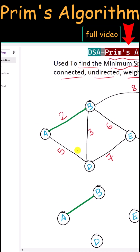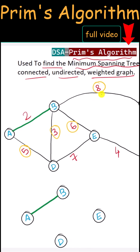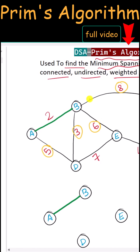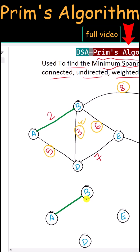We repeat the same process. Now we compare all the edges connected to A and B — we compare between five, three, six, and eight, since all of them are connected to A or B. We choose the smallest among them, which is three, so we take that edge.